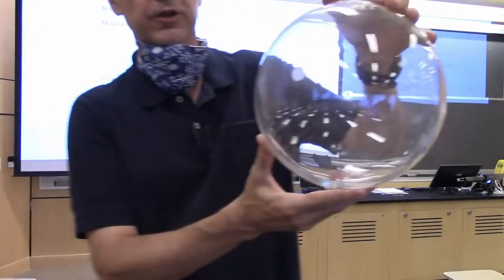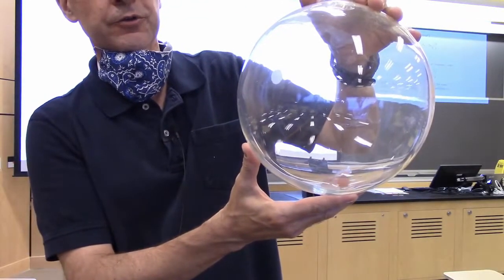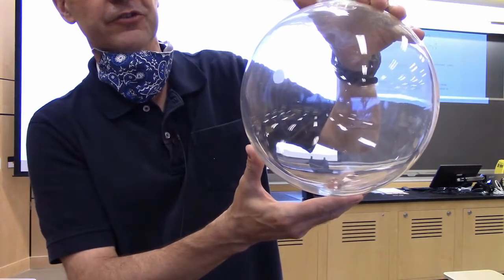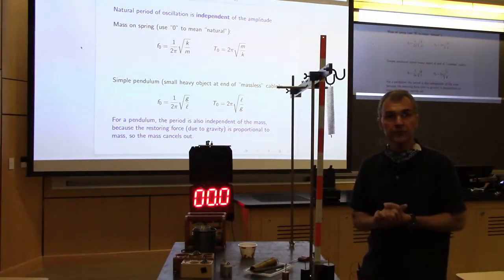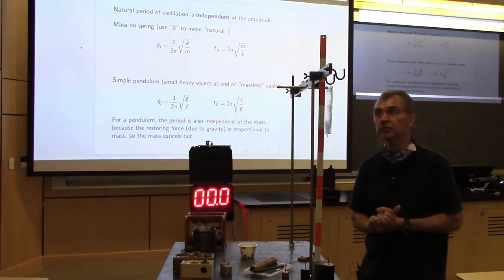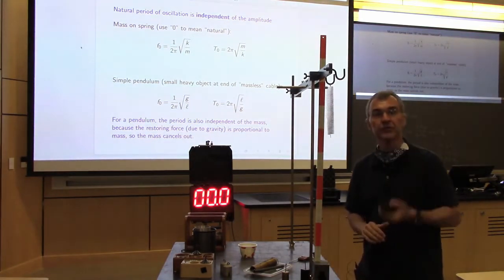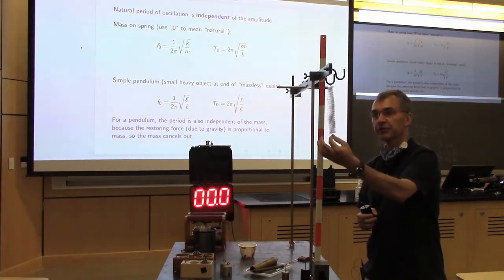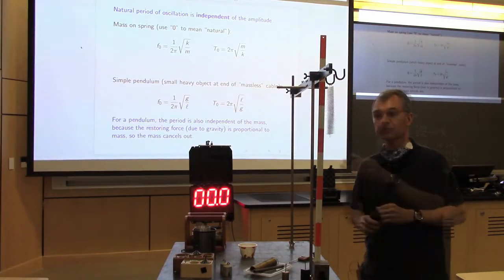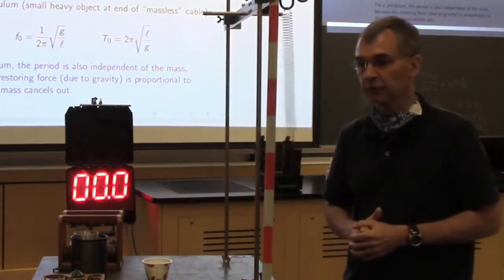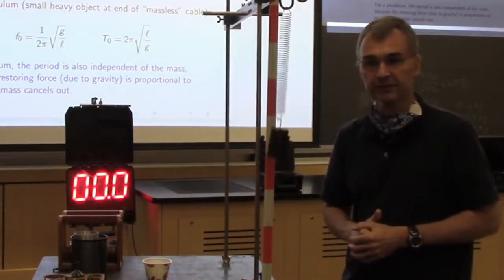We're going to review our two favorite examples of vibrating systems. One is the mass hanging on the end of a spring — the mass is also known as the bob. Here's a spring; we don't know the spring constant of this spring. If I put the mass on the spring, it's going to oscillate back and forth like this.